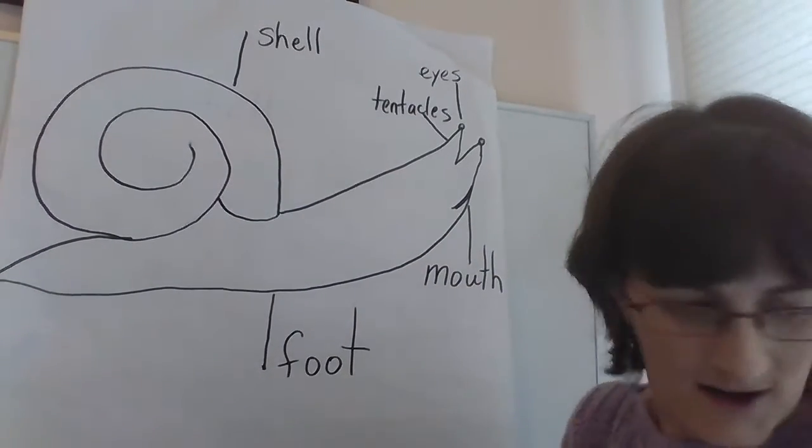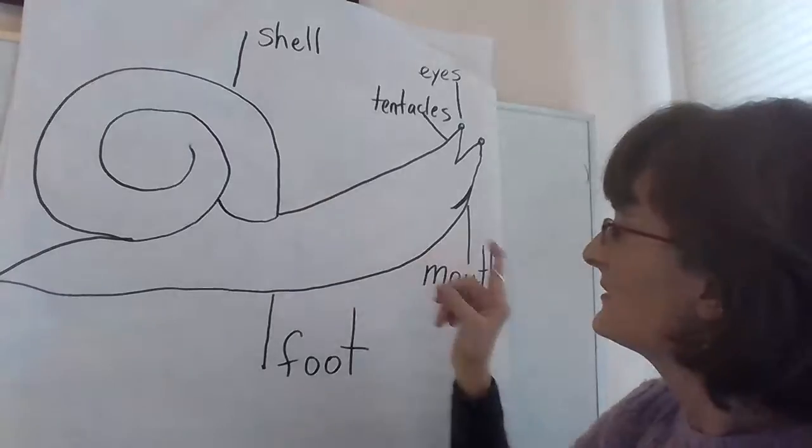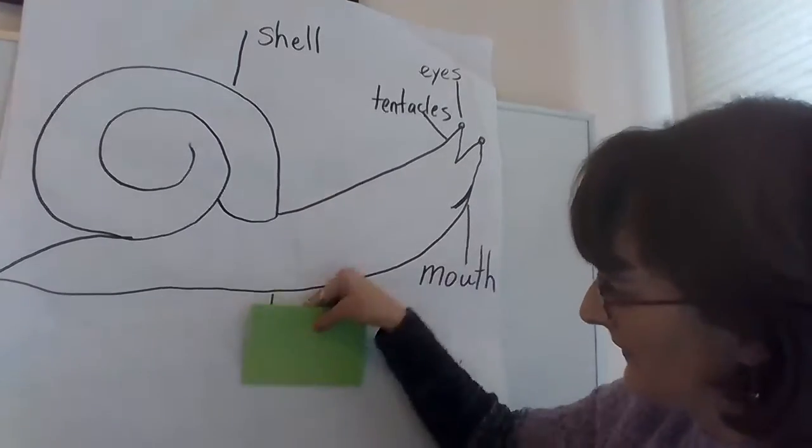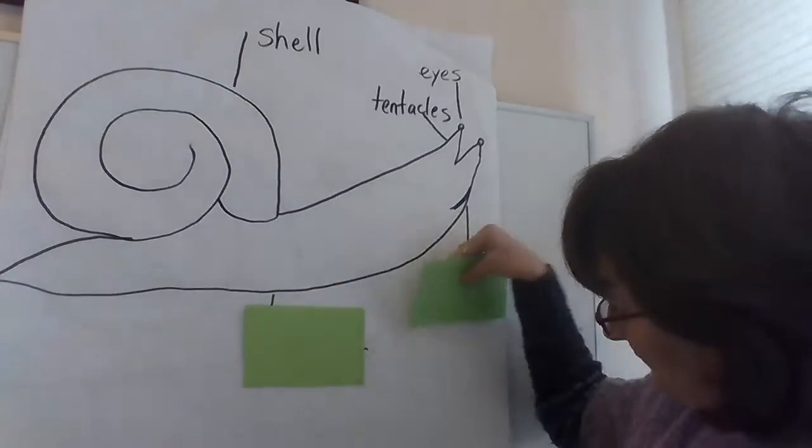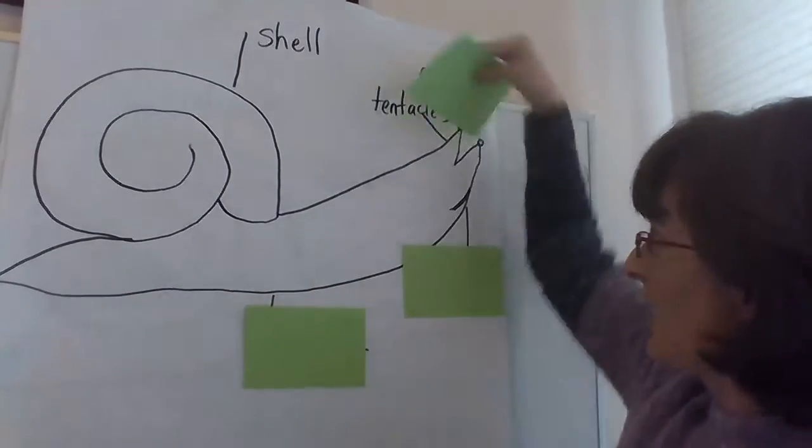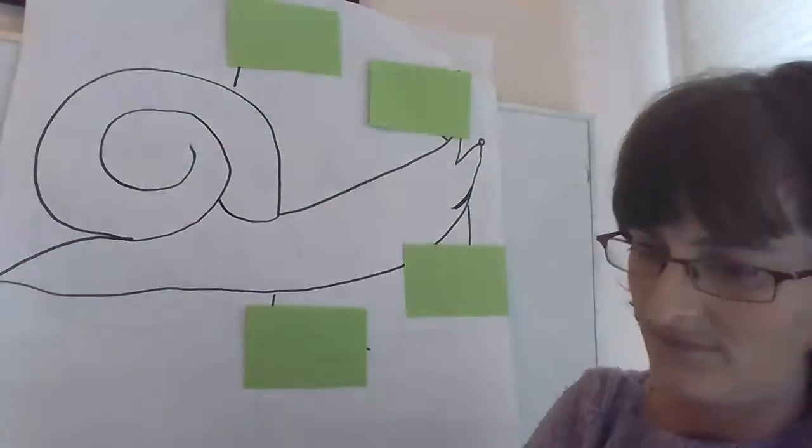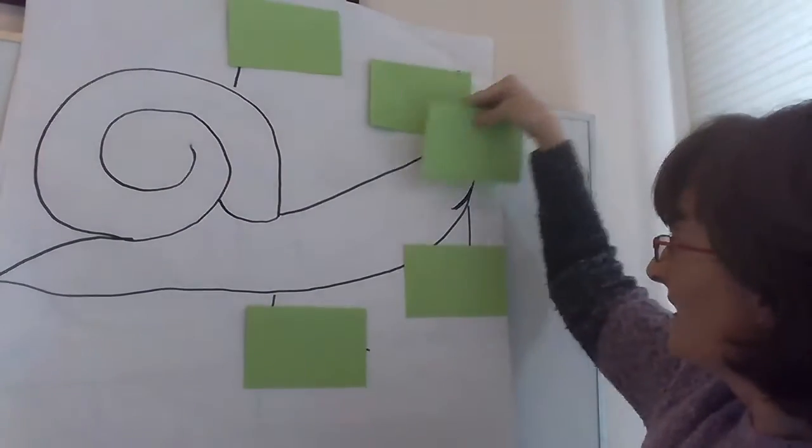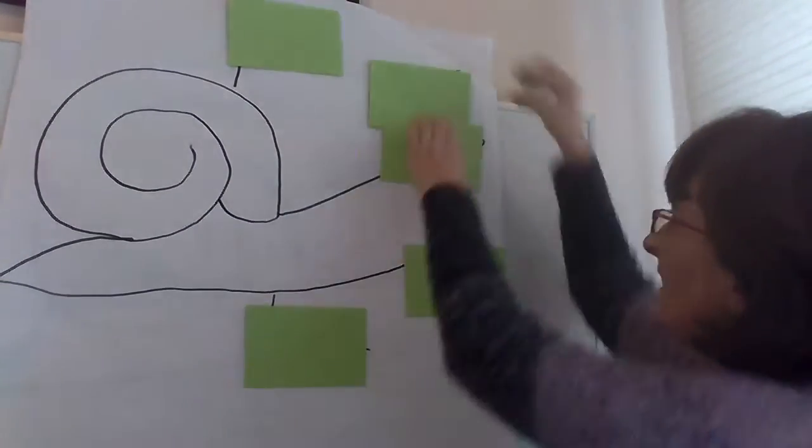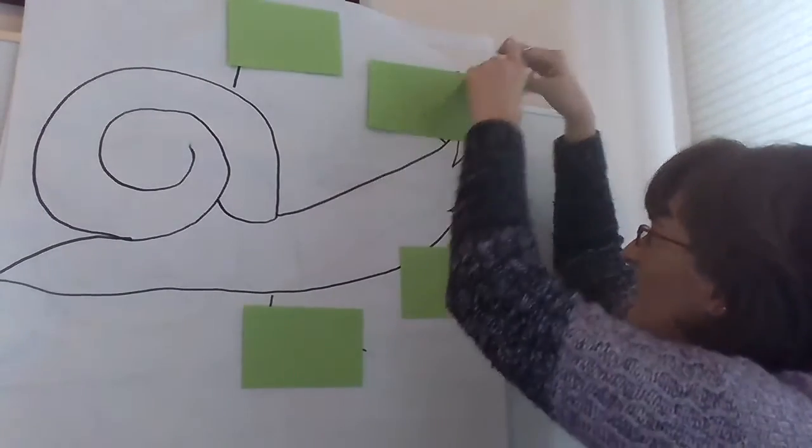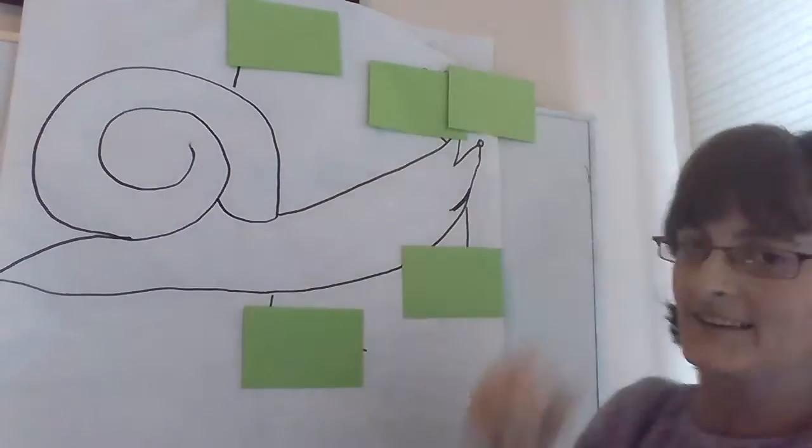Okay. So these are the parts of the snail. So what I want you to do is I want you to draw your snail on a paper. And then I want you to label the parts of the snail.